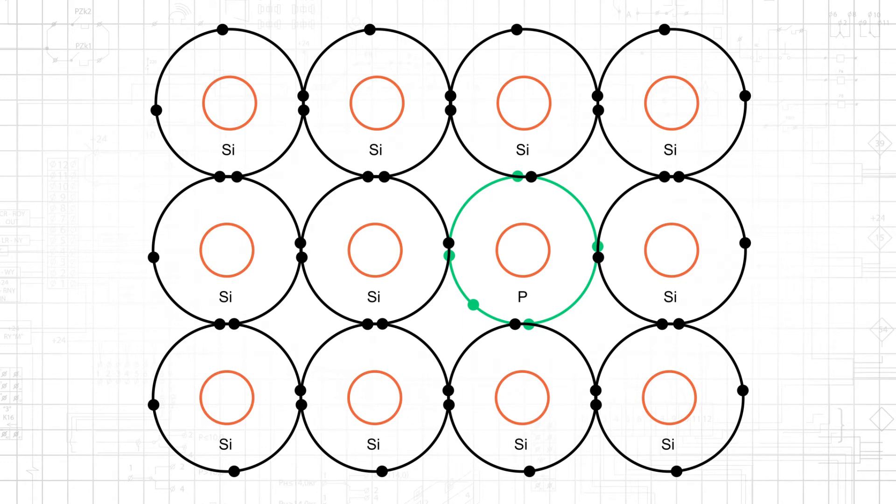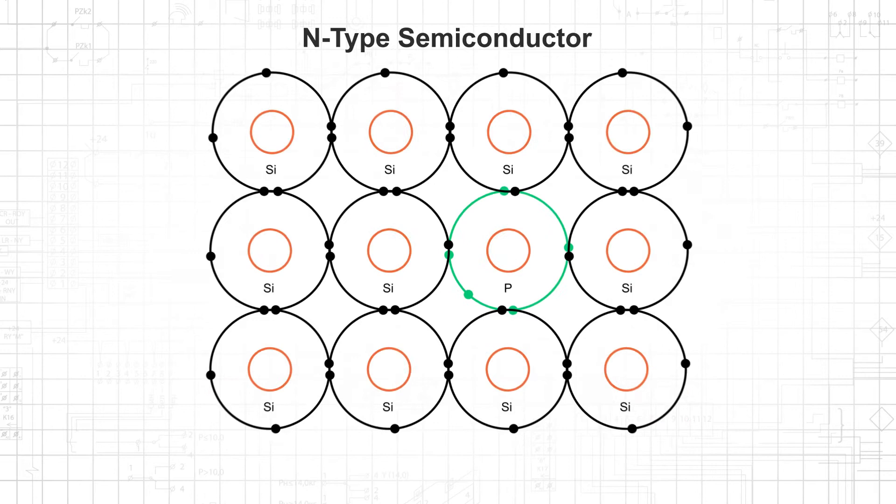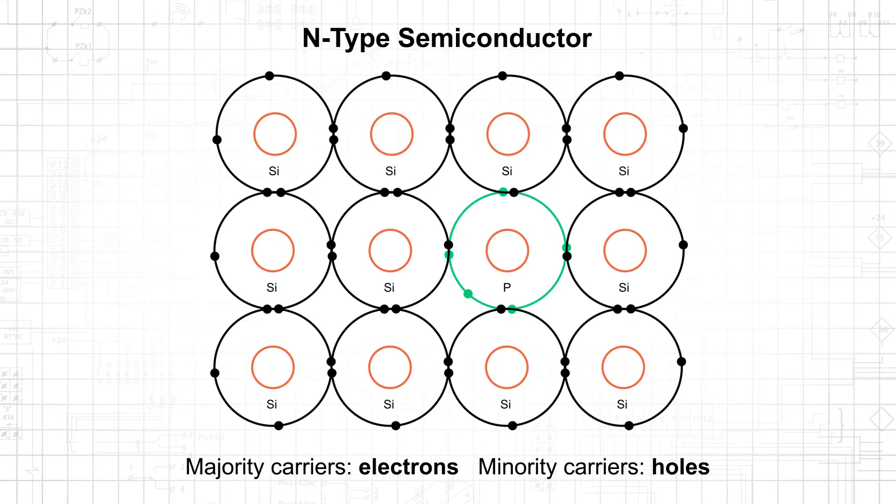In this situation, phosphorous functions as a dopant and the silicon becomes an n-type semiconductor. It has received additional free electrons through doping, and when an electric field is applied, current flow will be due primarily to the electrons, which have a negative charge. Thus, in an n-type semiconductor, electrons are the majority carriers, and holes are the minority carriers.